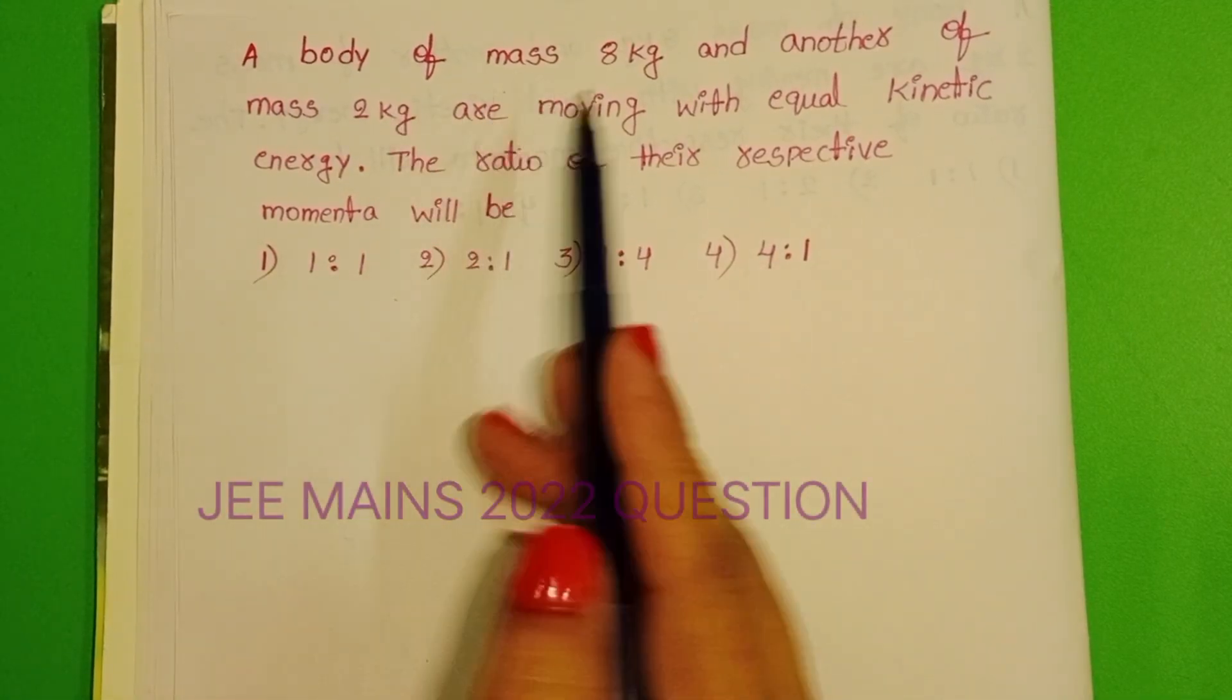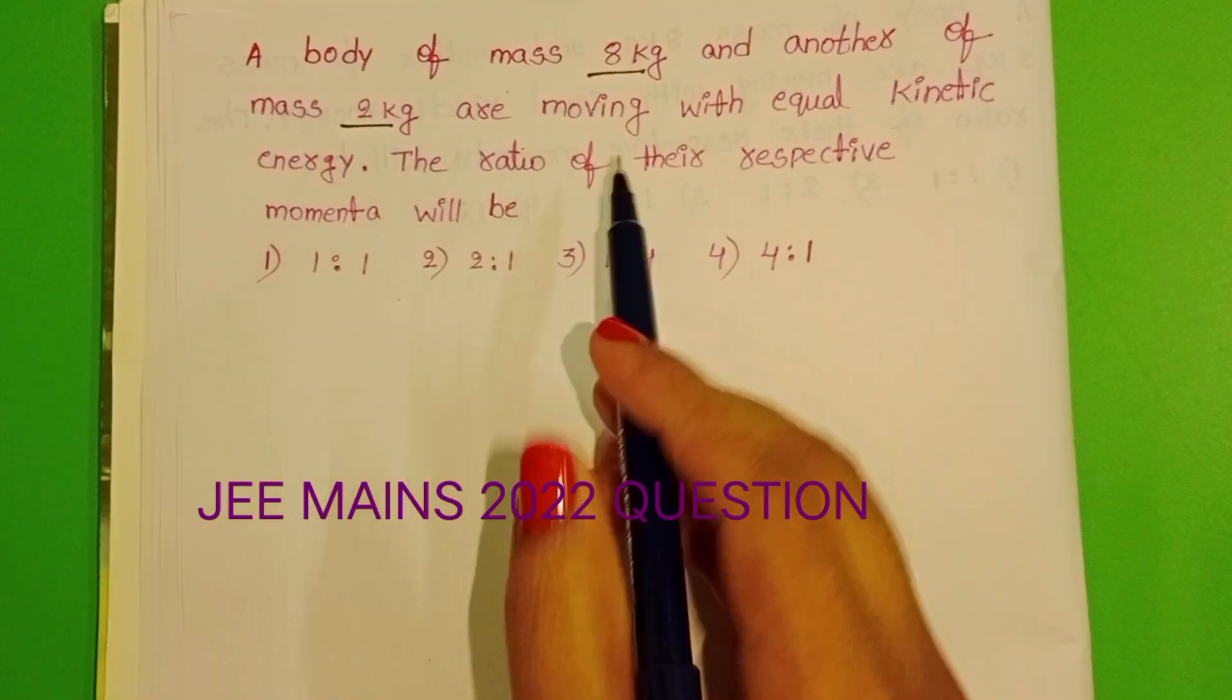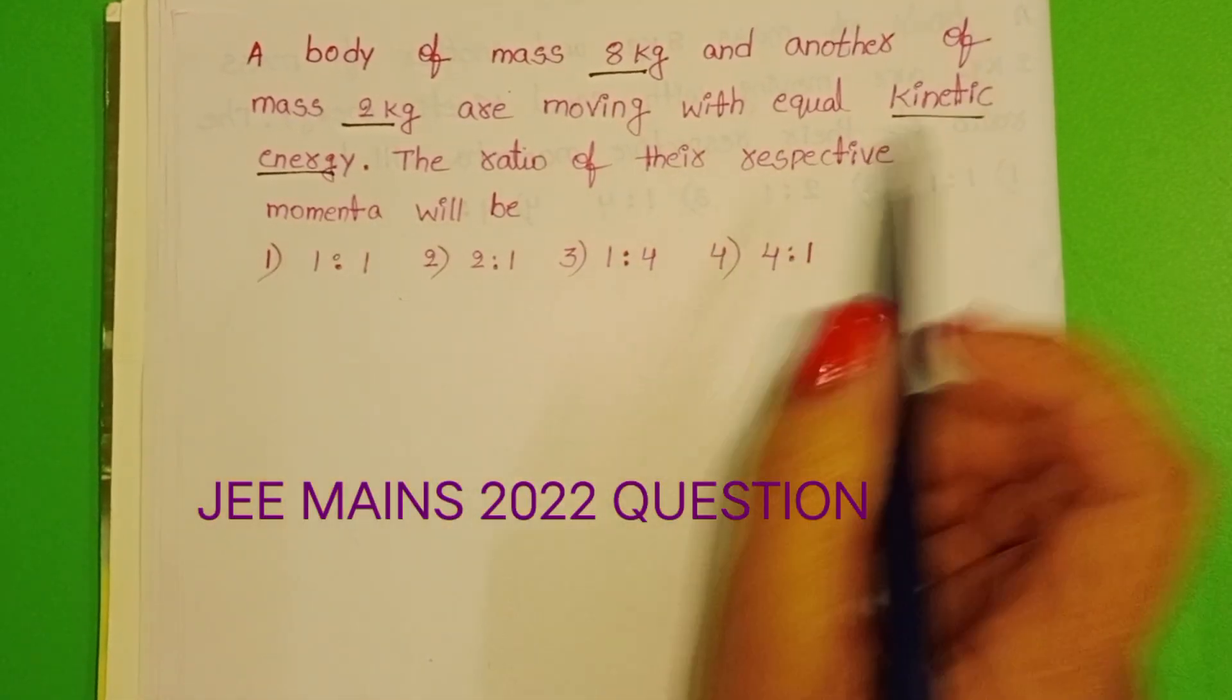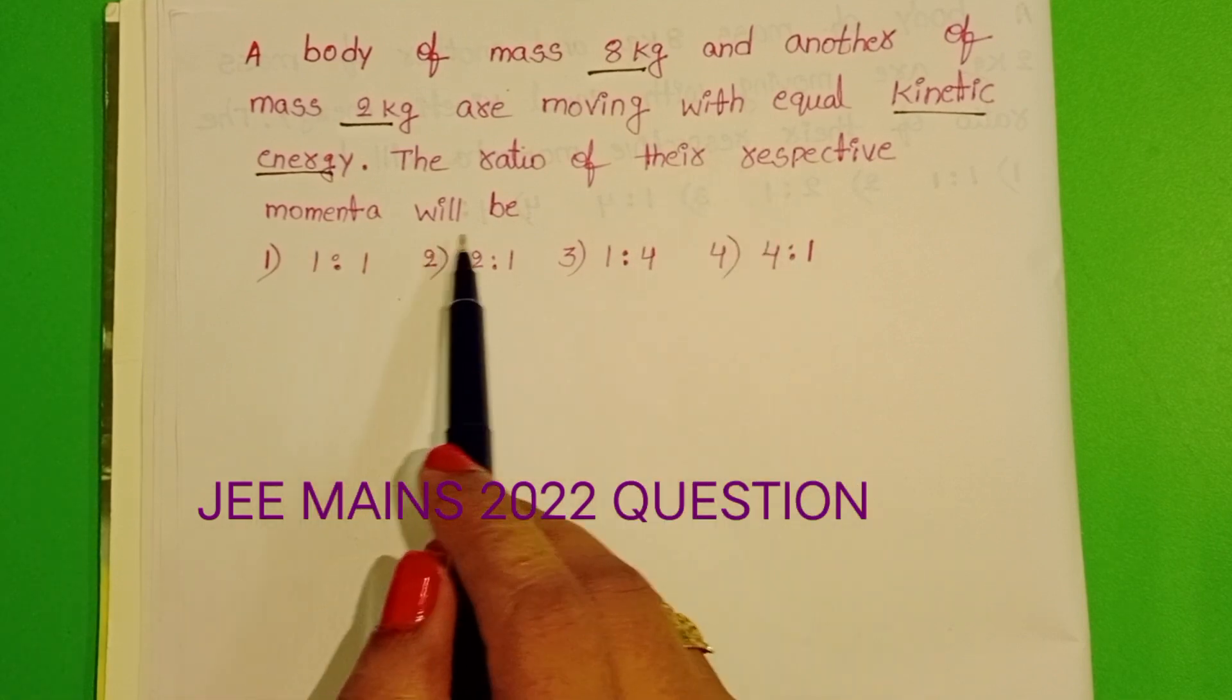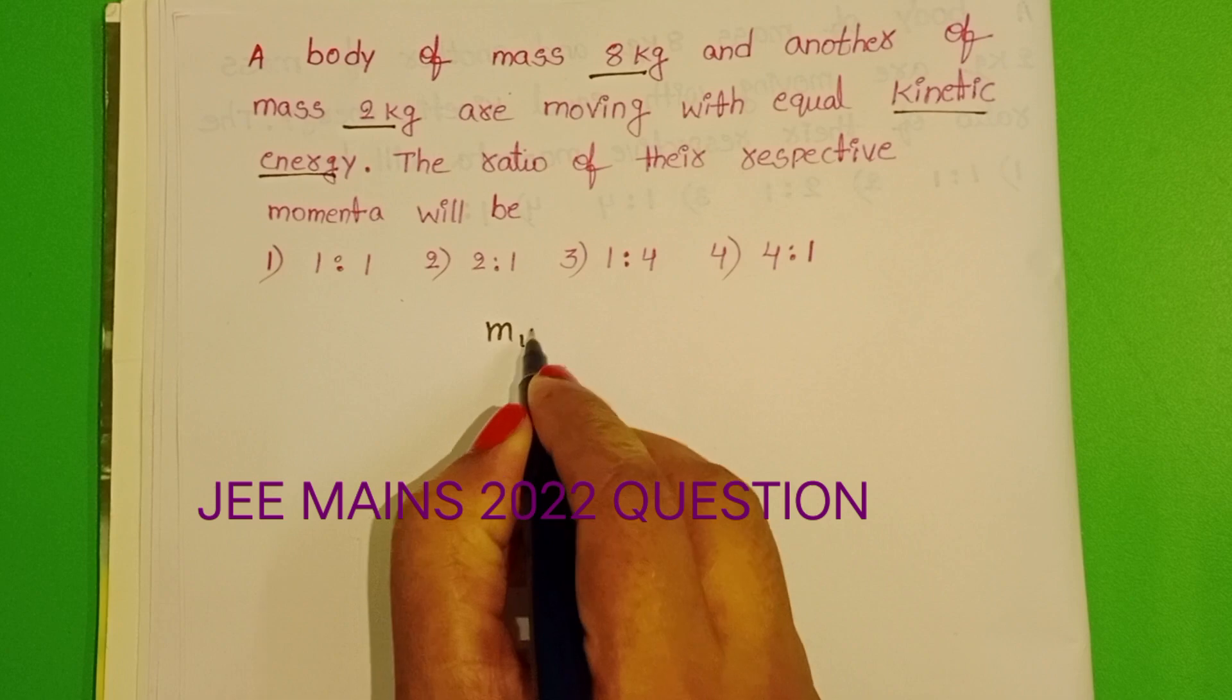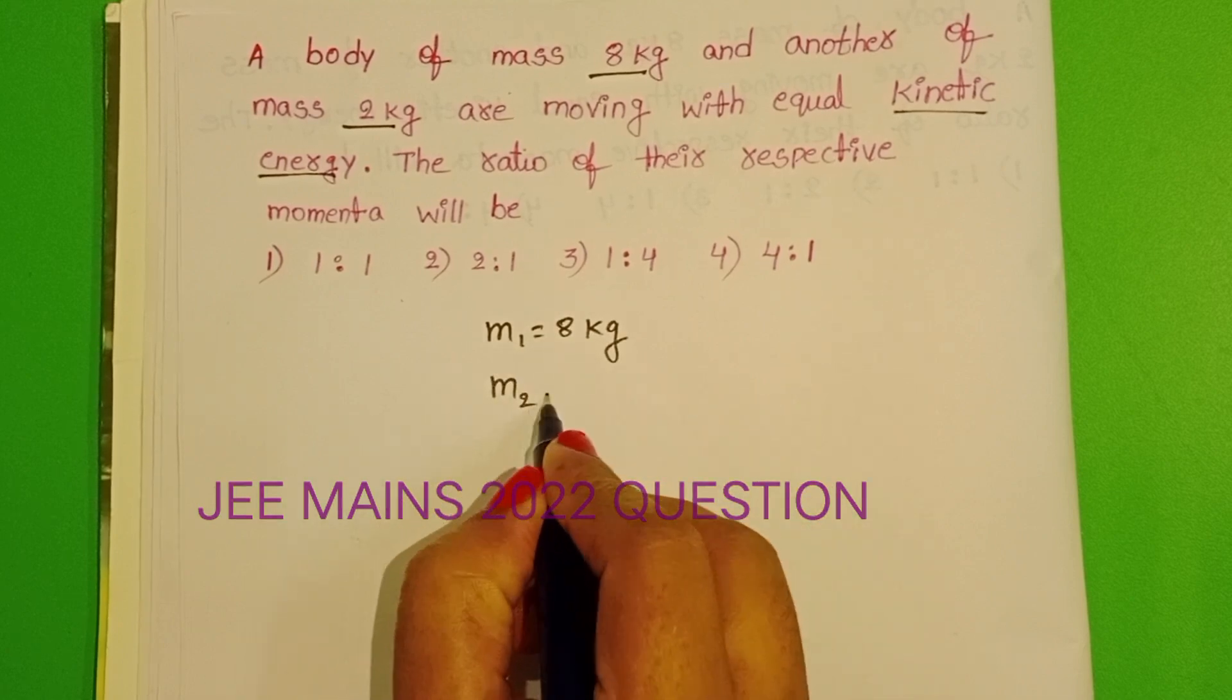A body of mass 8 kg and another of mass 2 kg are moving with equal kinetic energy. The ratio of their respective momenta will be: m₁ = 8 kg, m₂ = 2 kg.